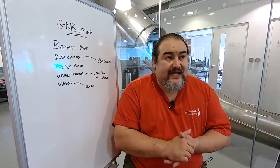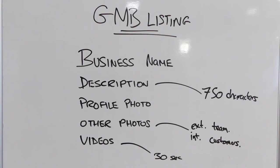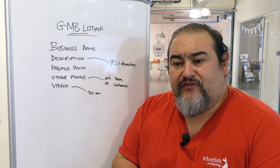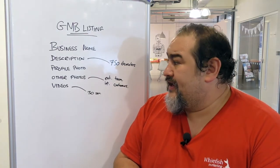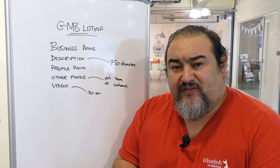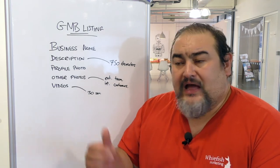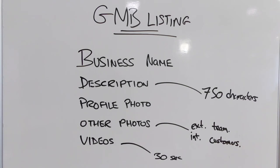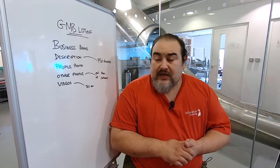So to recap: check your business name and make sure you don't add any erroneous details. Use the full 750 characters in your description, but put the most important information within the first 250. Do upload a profile photo, and upload other photos at 750 by 750 pixels. And if possible, do upload a video as well.